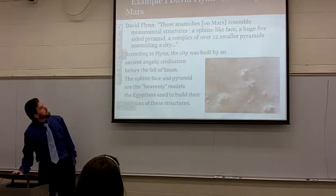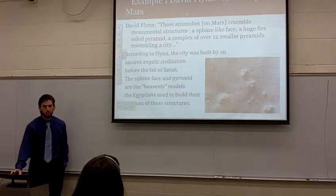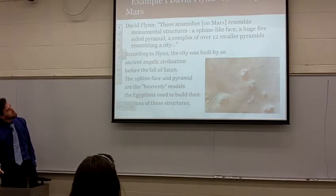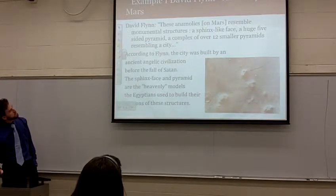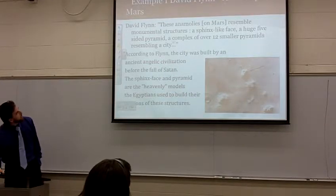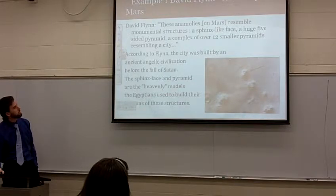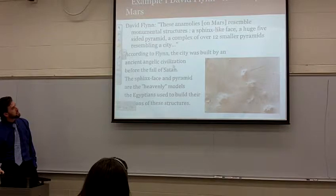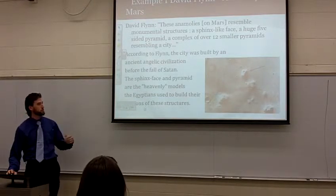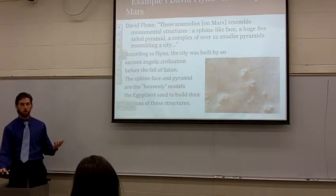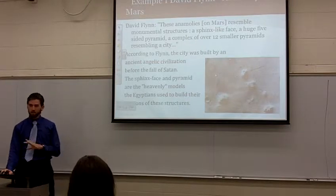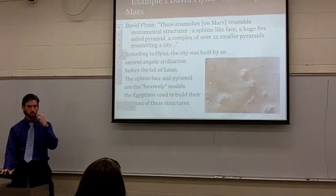Here's an example of an argument from authority from a guy named David Flynn. David Flynn is an authority on Mars and the Sidonian civilization on Mars. He says these anomalies on Mars resemble monumental structures — a sphinx-like face, a huge five-sided pyramid, and a complex of over twelve smaller pyramids resembling a city. According to Flynn, the city was built by an ancient angelic civilization before the fall of Satan, and the sphinx-like face and pyramid are the heavenly models the Egyptians used to build their earthly versions of these structures. So this is what this authority is telling you about Mars. Do you believe it?